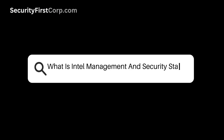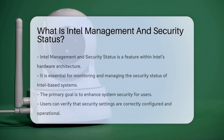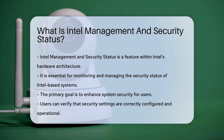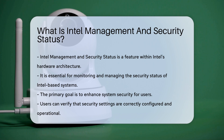What is Intel Management and Security Status? Intel Management and Security Status is a feature found in Intel's hardware architecture. This functionality is crucial for monitoring and managing the security status of Intel-based systems. It provides users with insights into the security features integrated into their hardware. The primary purpose of Intel Management and Security Status is to enhance system security.